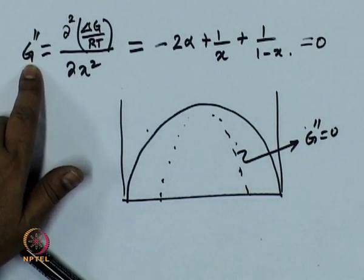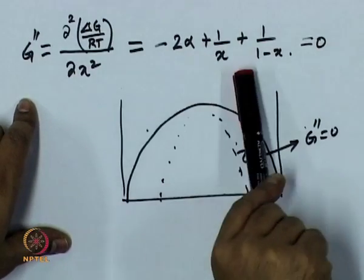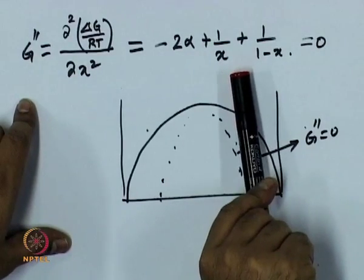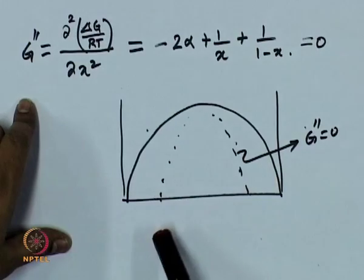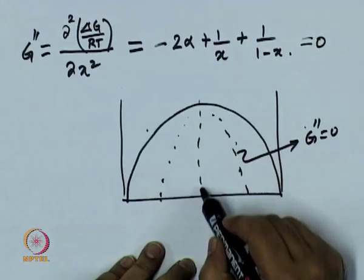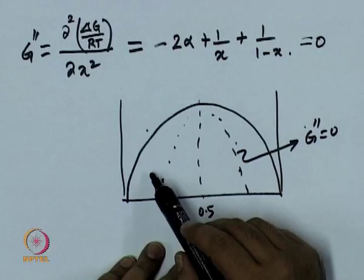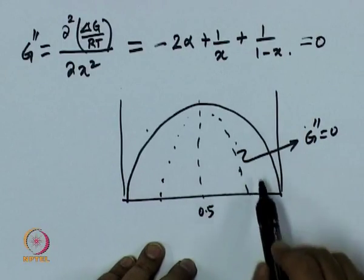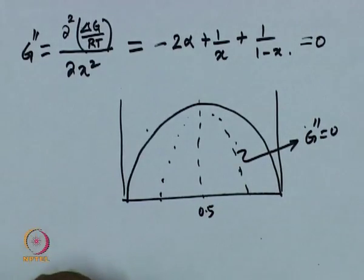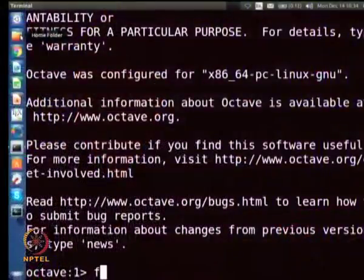Our strategy is going to be as before: we define the function g double prime in terms of alpha and x, and then identify its zeros. Again, I am going to split the domain into two parts about 0.5 — finding the points to the left and to the right — and then plot them. So let us define the function first.